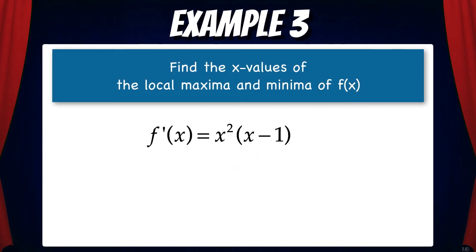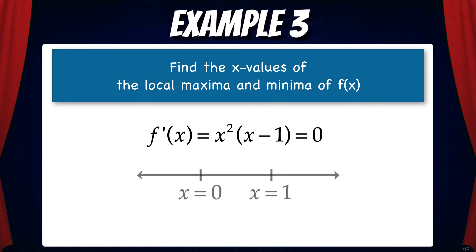Let's do one more example. Find the x values of the local maxima and minima of f of x, where f' equals x squared times the quantity of x minus one. This is an interesting problem because we don't have the f function, but since we know f' we can use the first derivative test. We find the critical points by setting the derivative equal to zero: x equals zero and x equals one. We place them on a number line to determine the sign of f' to the left of zero, between zero and one, and to the right of one.